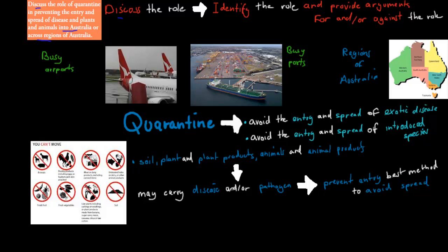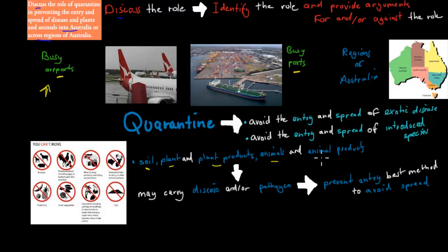We've got busy ports and busy cargo ships that come in on a daily basis. Our ports and airports are very busy, which means we've got millions of people coming into the country. With those people, we can also have products — for example, soil, plants, plant products, animals, and animal products coming into the country in shipping containers or with people coming through on planes. And those might have diseases or carry pathogens that cause disease.